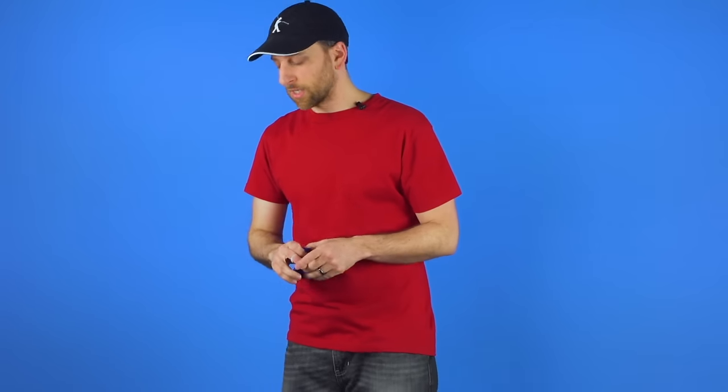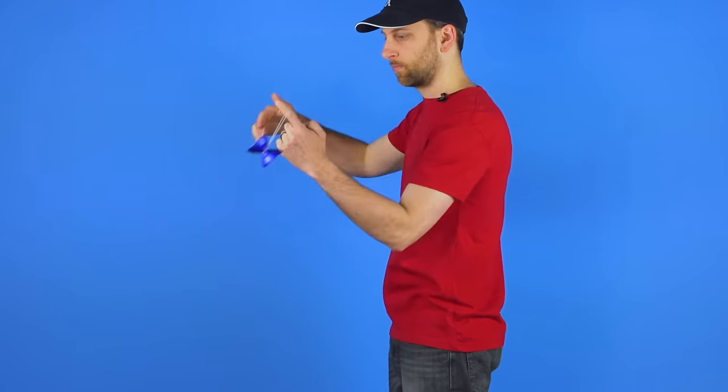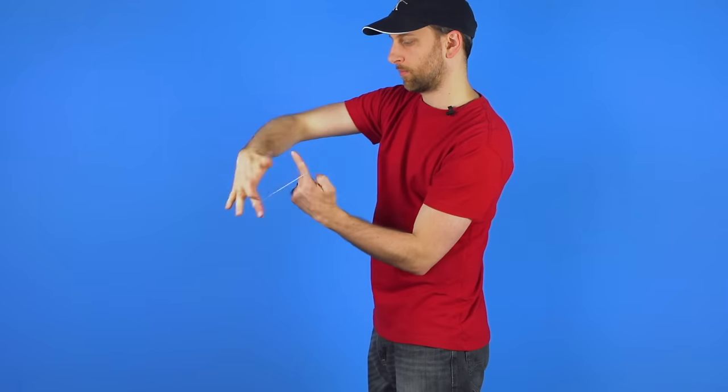Once you've got that little change down, you're ready to start moving the trick up into a horizontal position. When you do this, like we talked about in our Basics video, it's a good idea to start just a little bit horizontal and slowly move your way up until you've reached your goal.